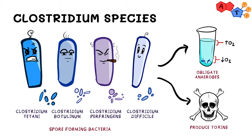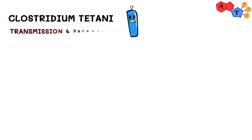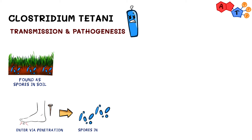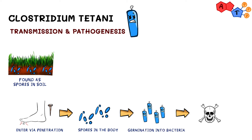Now let us dig a little deeper and talk about their important features. We'll talk about each one separately, starting with Clostridium tetani. Clostridium tetani is usually found as spores in soil, and they enter the body via penetrating injury. A classic scenario would be stepping barefoot on a rusty nail or splinter. Once the spores get into the body, they germinate into bacteria, and a tetanus toxin called tetanospasmin is produced.